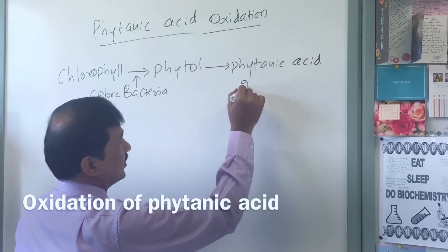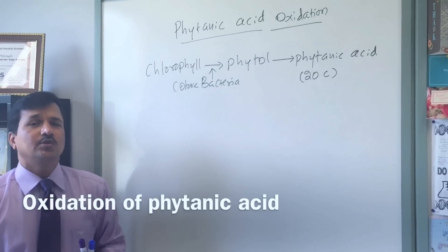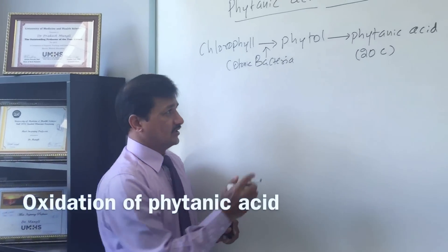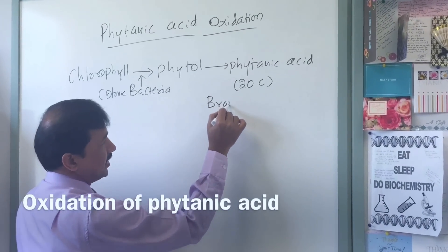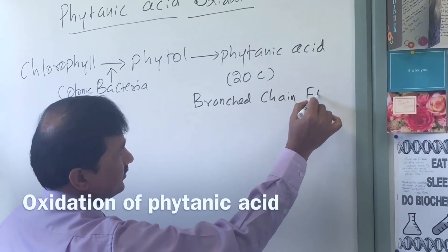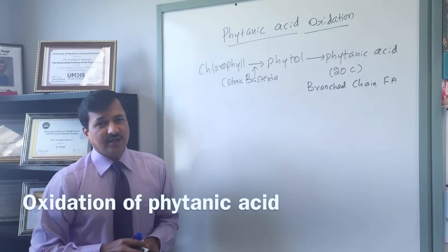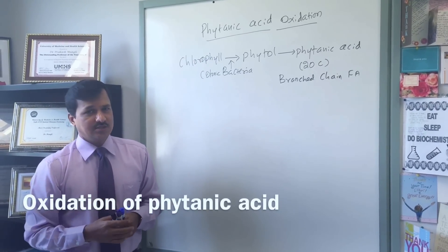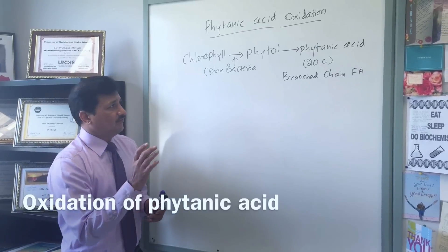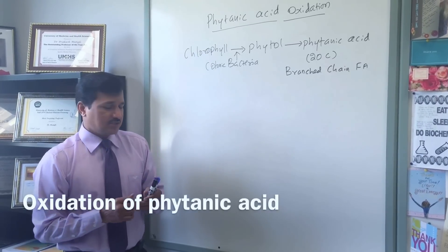Phytanic acid is a 20-carbon molecule. The specialty of phytanic acid compared to other fatty acids is that phytanic acid is a branched chain fatty acid — we need to take note of that. It has 20 carbons and is a branched chain fatty acid. The oxidation of this branched chain fatty acid is a little different from beta oxidation going on commonly in our mitochondrial matrix.